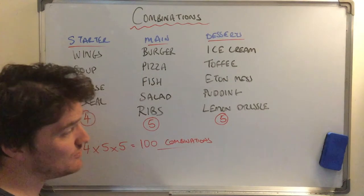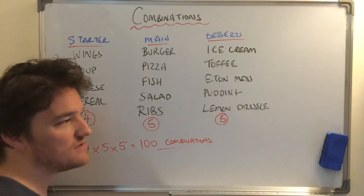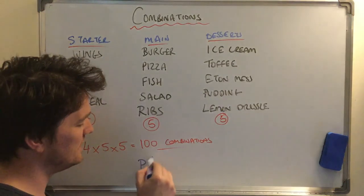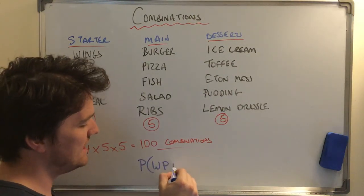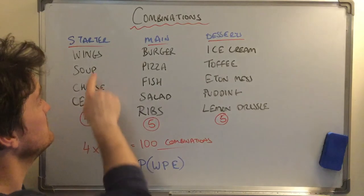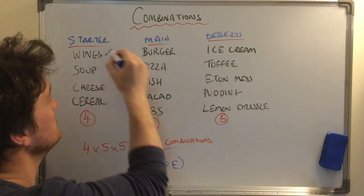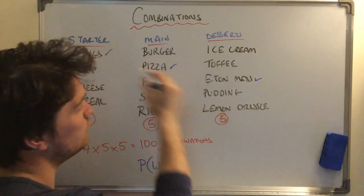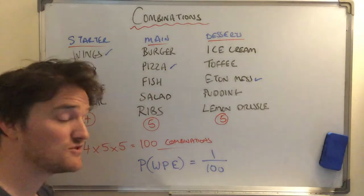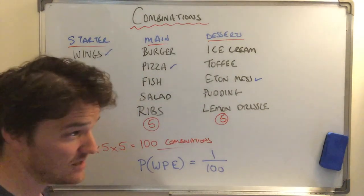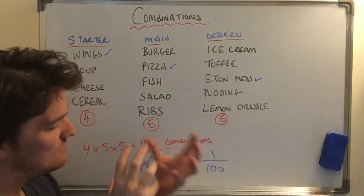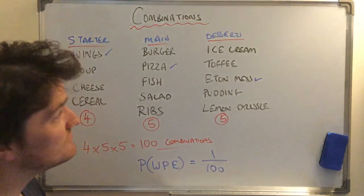To link combinations to probability: a person comes in — what's the probability they order wings, pizza, and Eton mess? Wings, pizza, and Eton mess is only one specific combination out of one hundred. So if you're trying to guess the next person's order, you have a one-in-a-hundred chance of being right. That's how combinations link to probability.